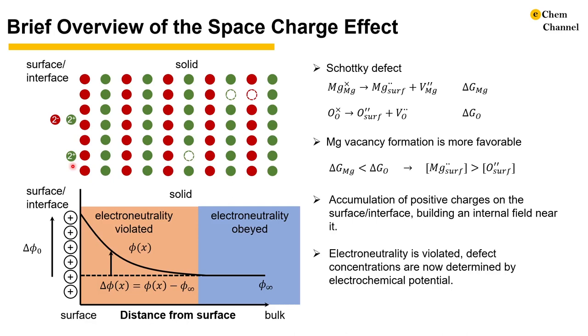The defect concentrations there are determined by electrochemical potential. This is in contrast to the bulk crystal, where the defect concentrations are generally controlled by chemical potential. This is the space charge effect in a nutshell. Next, we are going to dive into the analytical solution to the distribution of defect concentrations.